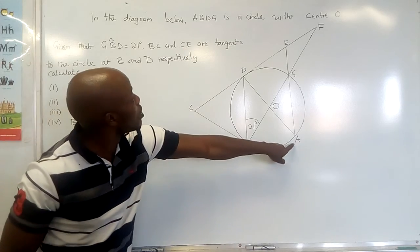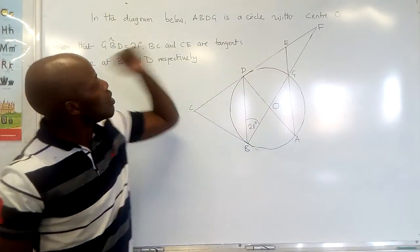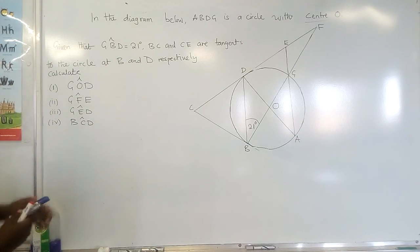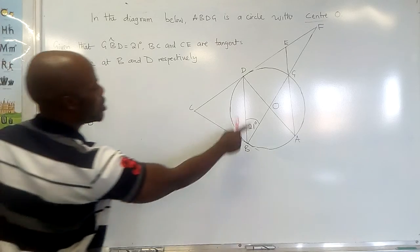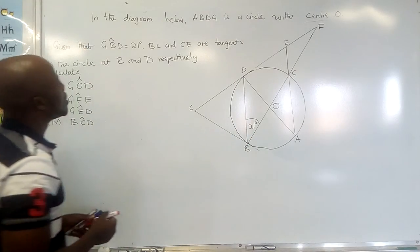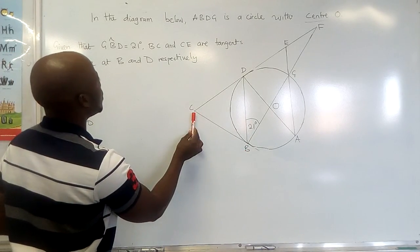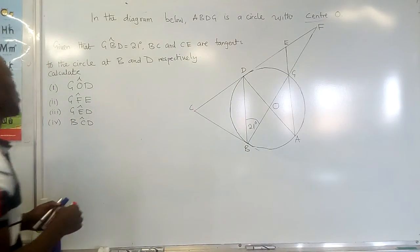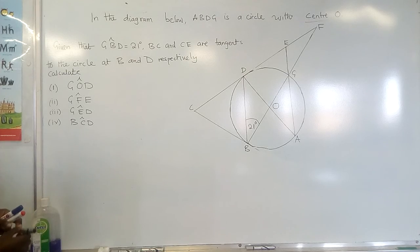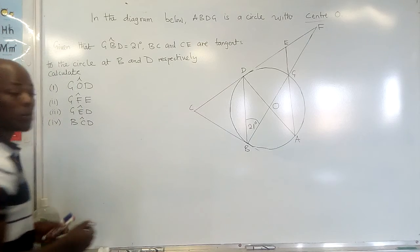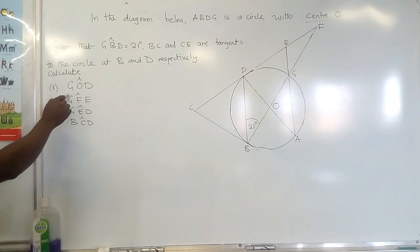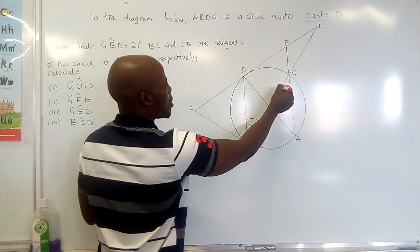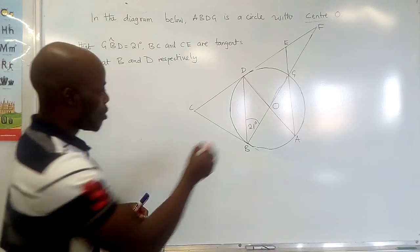In the diagram below, ABD is a circle with center O. The center O is marked. Given that angle GBD is 21 degrees, BC is a tangent line and CE is also a tangent line. The circle passes through G, B, and D respectively. We want to calculate angle GOD.